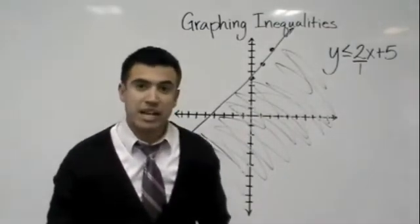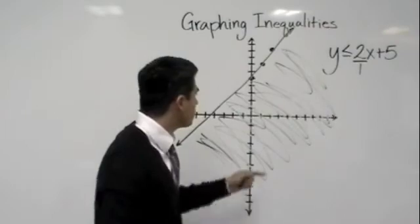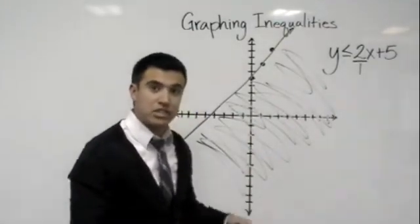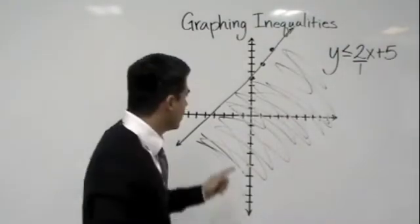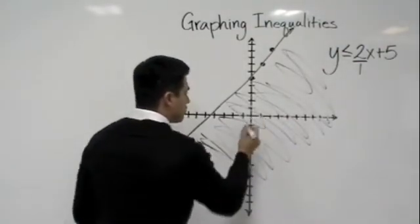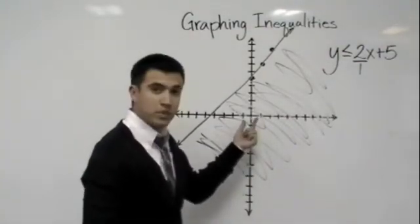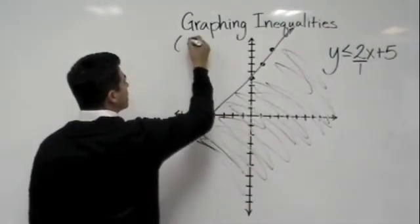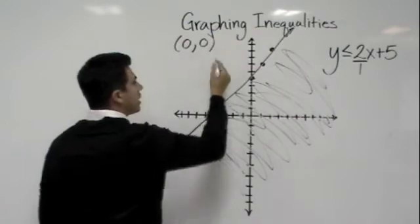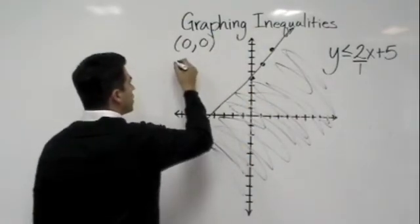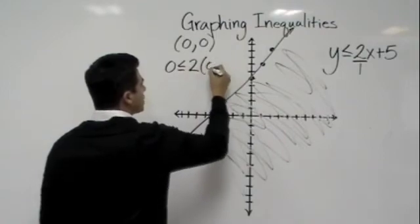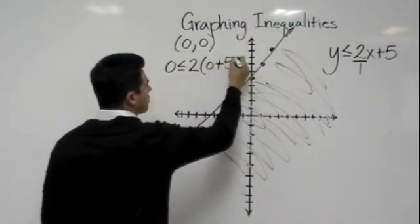Here's one other thing that the teachers might have you do. They might actually tell you to pick a point in the area that you shaded to make sure that the inequality is true. Let's take 0, 0 for example because 0, 0 falls in the shaded region. Let me see if that's true. I'm going to go ahead and take 0, 0 and I'm going to plug it into my inequality. That would mean 0 is less than or equal to 2 times 0 plus 5.